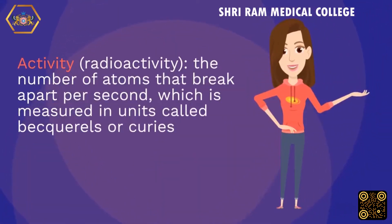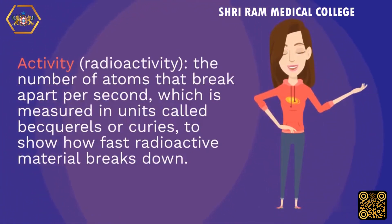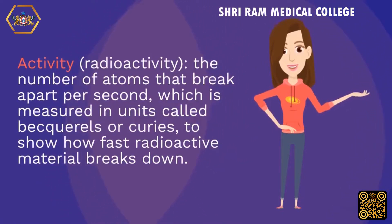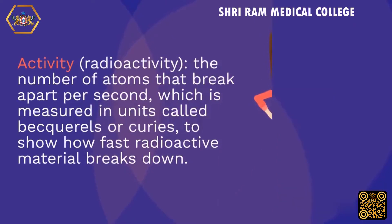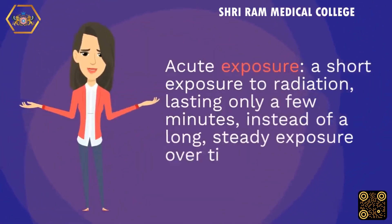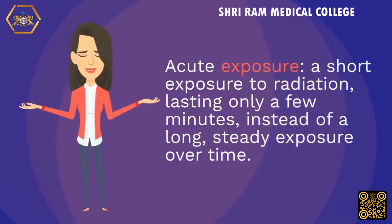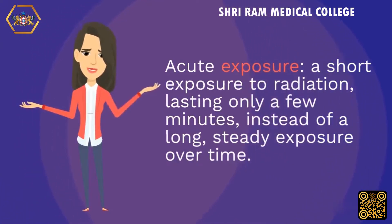Activity (radioactivity): the number of atoms that break apart per second, which is measured in units called becquerels or curies, to show how fast radioactive material breaks down. Acute exposure: a short exposure to radiation, lasting only a few minutes, instead of a long, steady exposure over time.